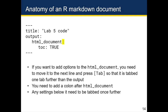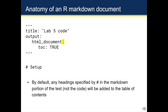In this case, the option being added is a table of contents to the R Markdown document. The only difference from the R Notebook header is that a table of contents has been added and it's been converted to an R Markdown document. By default, any headings specified with a hashtag or pound sign in the Markdown portion of the text will be added to the table of contents — specifically headers using one, two, or three hashtags.